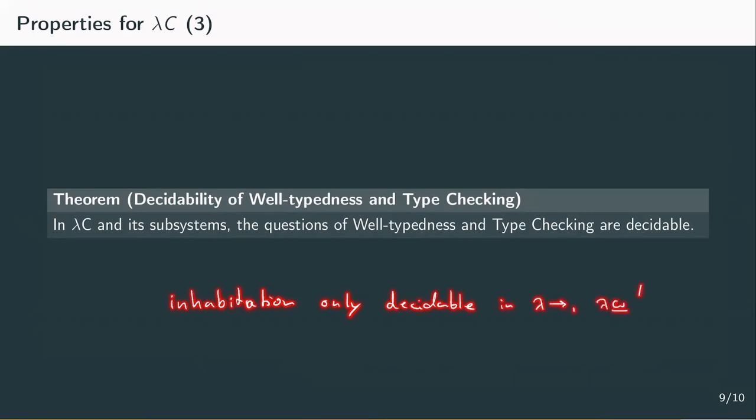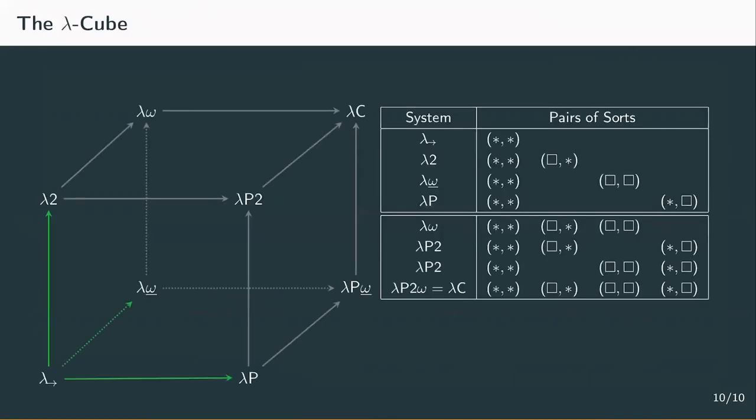The lambda cube is a framework that brings together the basic lambda calculi and their combinations. The simply-typed lambda calculus is the basis for all systems, and all systems are contained in lambda C. Each system inhabits different type term dependencies, and we can formalize and display the lambda cube using these dependencies. We can describe every system and each combination with a uniform definition of the derivation rules, with just one rule to change accordingly to the systems contained, the formation rule. Which dependency is possible to be derived is uniquely determined by a pair of sorts, s1 and s2.